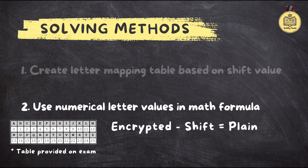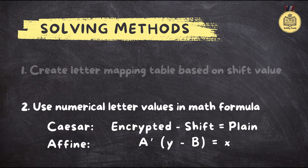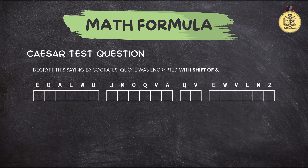How does this tie in with the affine cipher? The Caesar cipher is like a stepping stone to the affine cipher. The affine formula is A-inverse times (Y minus B) equals X. In a Caesar cipher, that A-inverse is always 1 and B is simply the shift amount. So if you learn the affine formula, you're basically learning two ciphers at once — the Caesar cipher is like training wheels for the affine cipher.